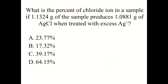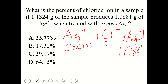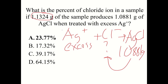Quick knowledge check: What is the percent of chloride ion in a sample if 1.1324 g of the sample produces 1.0881 g of AgCl when treated with excess Ag⁺? The correct answer is 23.77%. The reaction is Ag⁺ + Cl⁻ → AgCl. Use stoichiometry to convert grams AgCl to grams Cl⁻, then divide by the original sample mass and convert to a percentage.